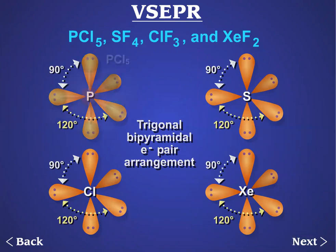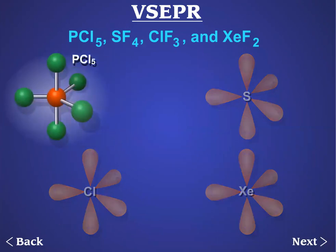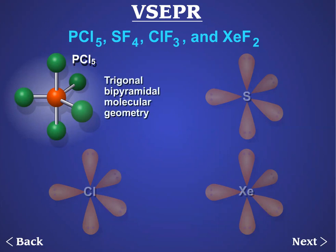The molecular geometry is the arrangement of the central atom and the atoms bonded directly to it. In PCl5, all five electron pairs around phosphorus are bonding pairs. The molecular geometry is trigonal bipyramidal with bond angles of 120 degrees and 90 degrees.